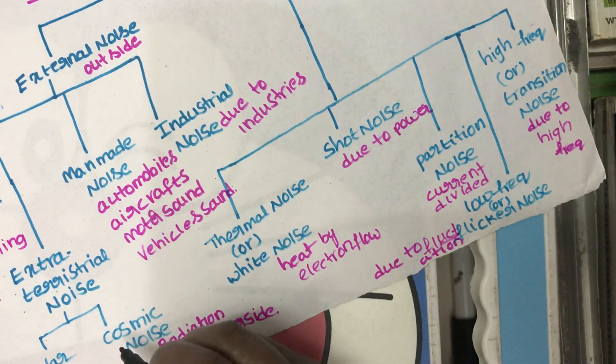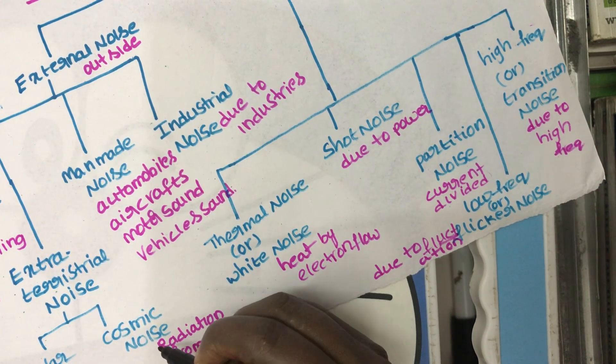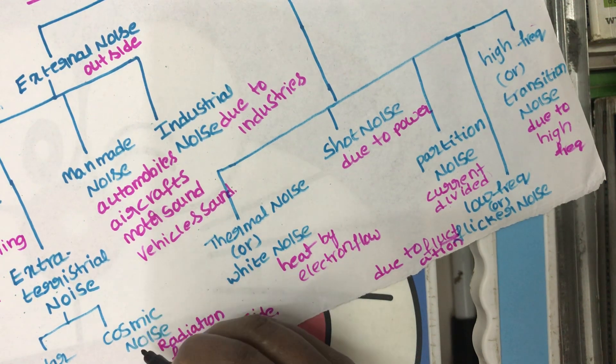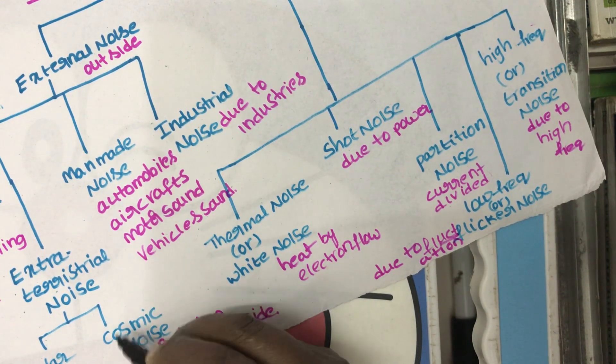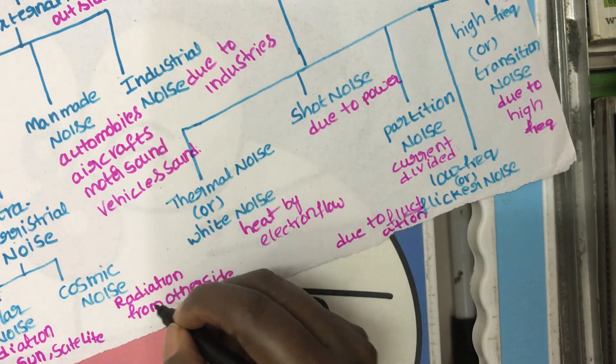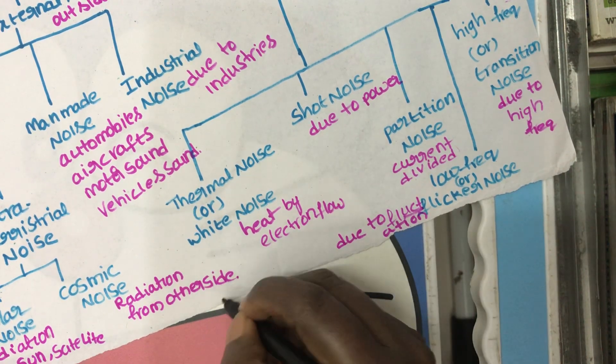Extraterrestrial noise is further classified into two types: solar noise and cosmic noise. Solar noise occurs due to radiation from sun or satellites. Cosmic noise occurs due to radiation from other stars.